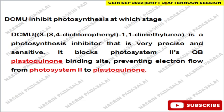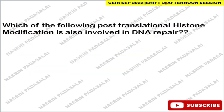Next: DCMU inhibits photosynthesis at which stage? DCMU (3-(3,4-dichlorophenyl)-1,1-dimethylurea) is a precise and sensitive photosynthesis inhibitor. It inhibits or blocks Photosystem II at the QB site — that is, the plastoquinone binding site — preventing the flow of electrons from Photosystem II to plastoquinone.